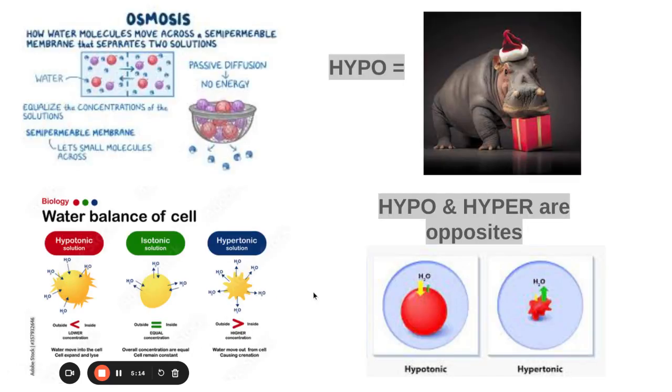So again, a couple of things to remember here. Hypo, hippo. Hypo and hyper are opposites. And then isotonic, the water's just kind of moving back and forth at an equal pace.